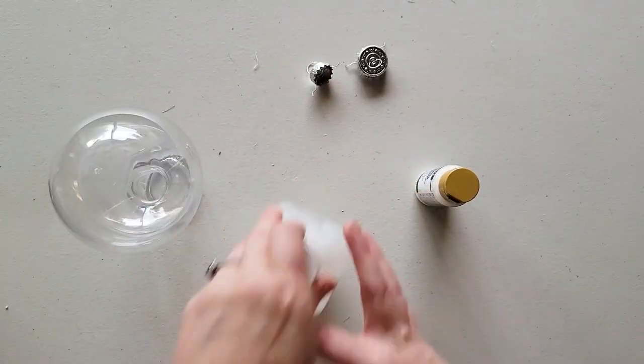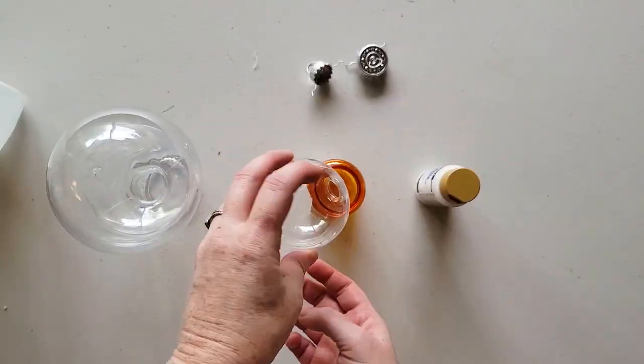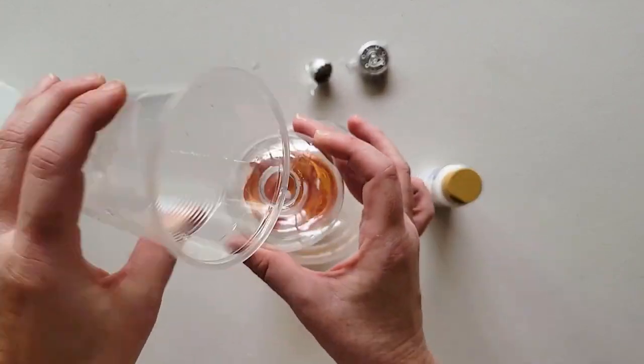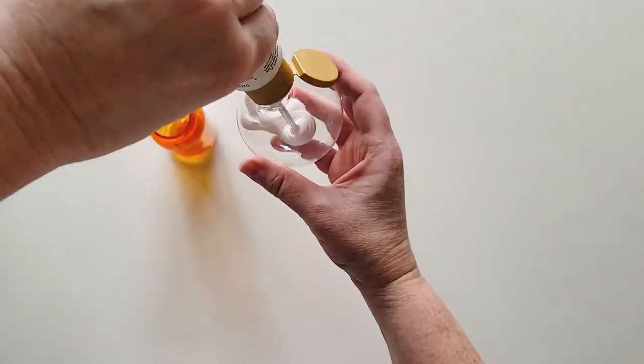To paint the inside of ornaments, first you'll remove the top and swirl some rubbing alcohol on the entire inside of the ornament and let it dry completely.